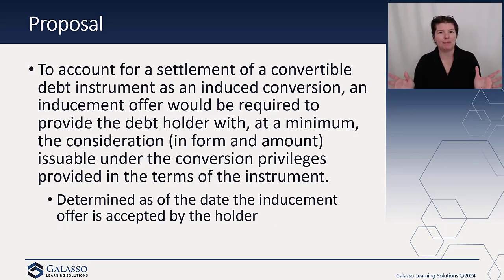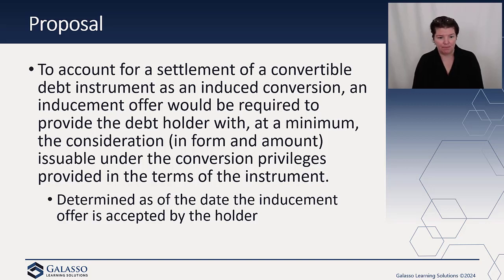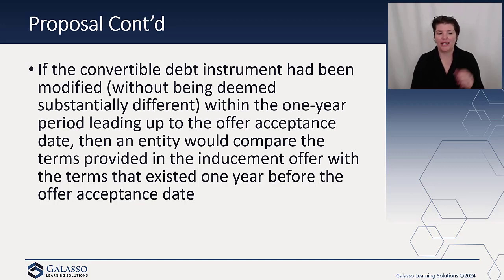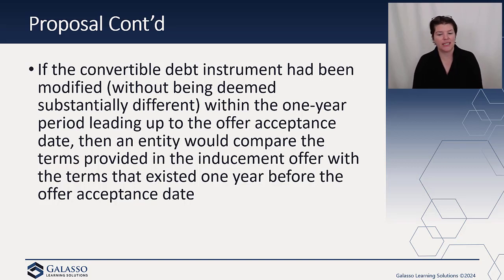The big picture on the proposal is that it would allow you to account for a settlement of a convertible debt instrument as an induced conversion. An inducement offer would be required to provide the debt holder with at a minimum the consideration in form and amount issuable under the conversion privileges provided in the terms of the instrument, determined as of the date the inducement offer is accepted. If the convertible debt instrument had been modified without being deemed substantially different within the one-year period leading up to the offer acceptance date, they would compare the terms in the inducement offer with the terms prevalent in that one-year period.